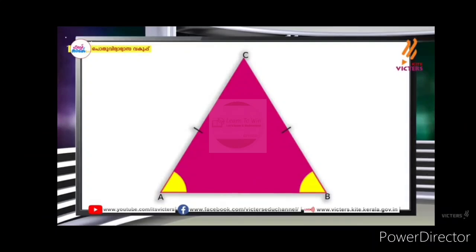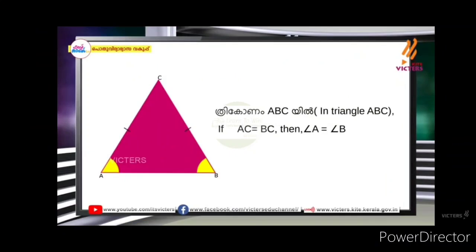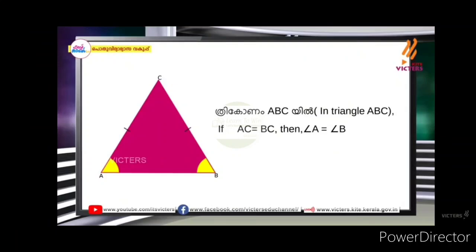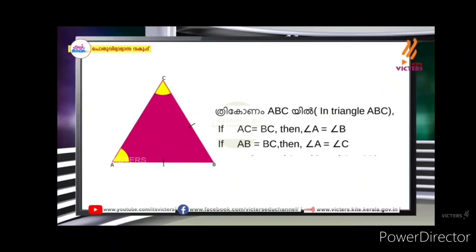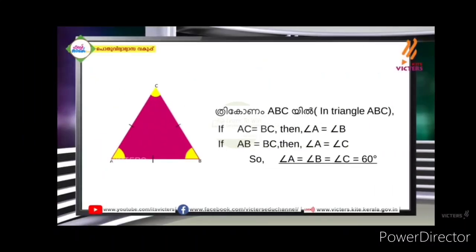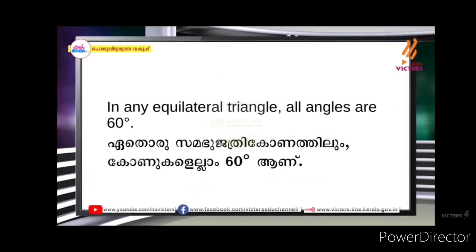That's an equilateral triangle. Let's look at angle A, B, and C. The angle A is equal to angle B, and this is equal to angle A. Three sides are equal, and one angle is equal to 60 degrees. In any equilateral triangle, all angles are 60 degrees.